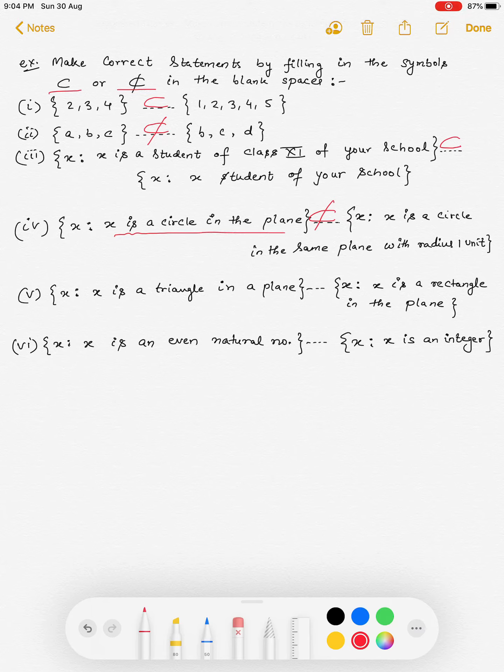यहाँ पर बोला जा रहा है, X is a circle in the plane, तो उसका radius 1 भी हो सकता है, 2B, 3B, तो वो कैसे subset होगा जब radius 1 unit का है उदर.